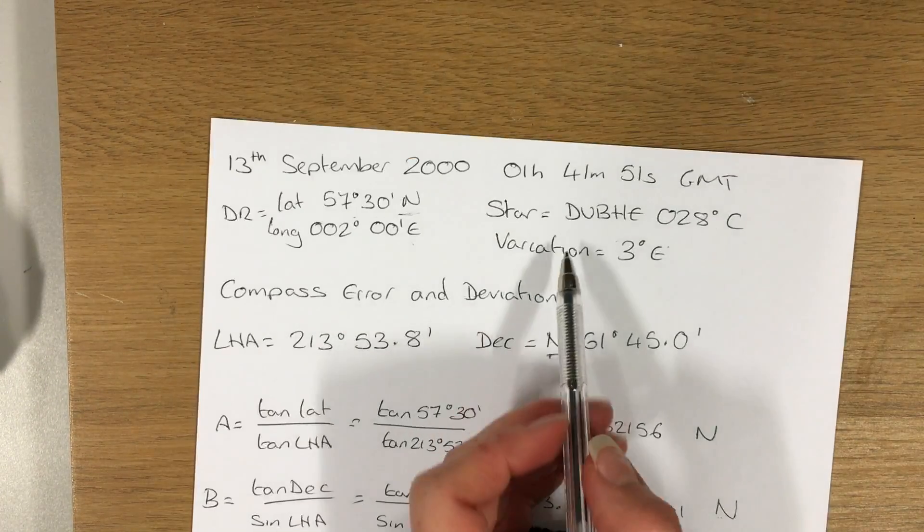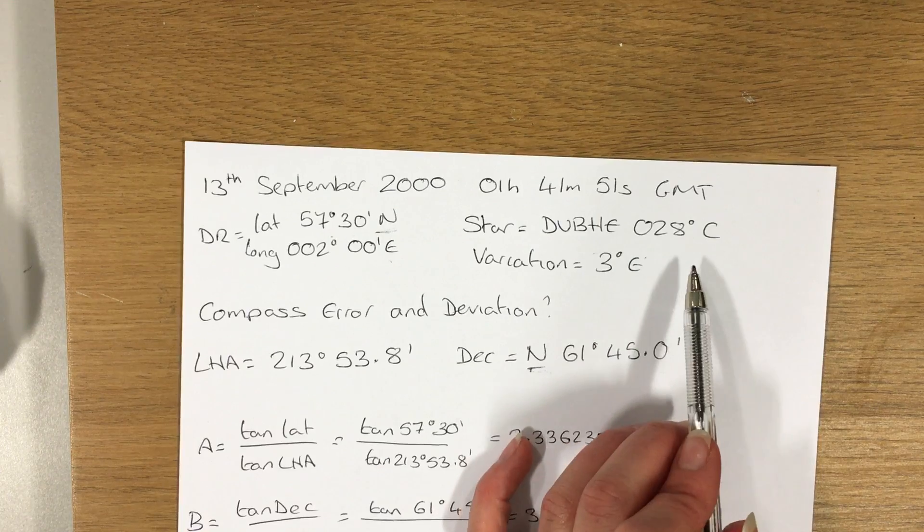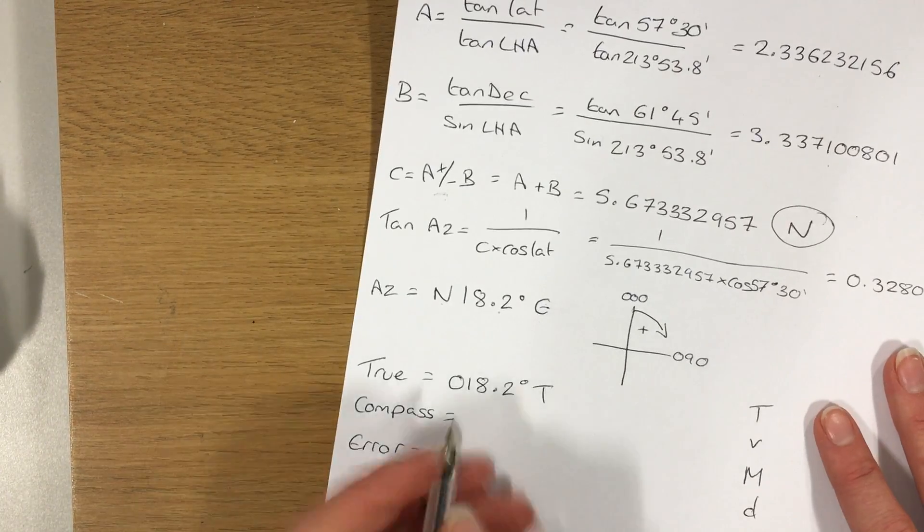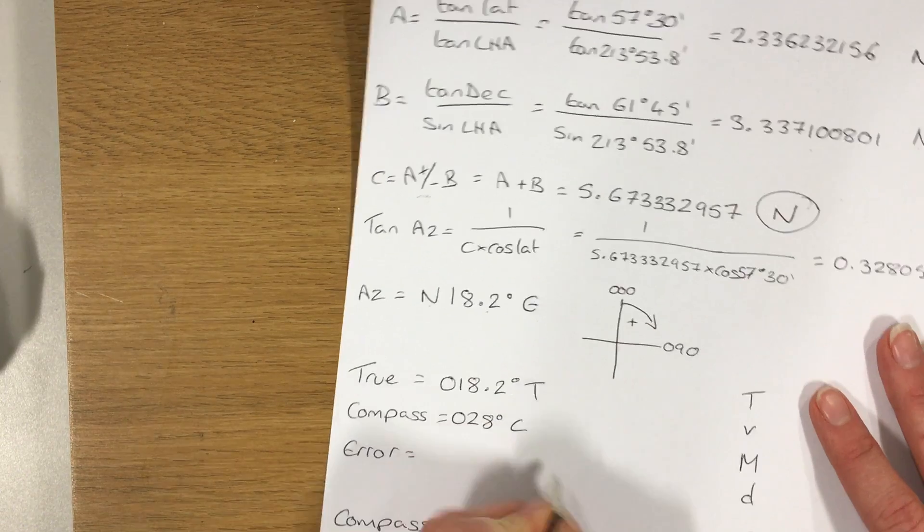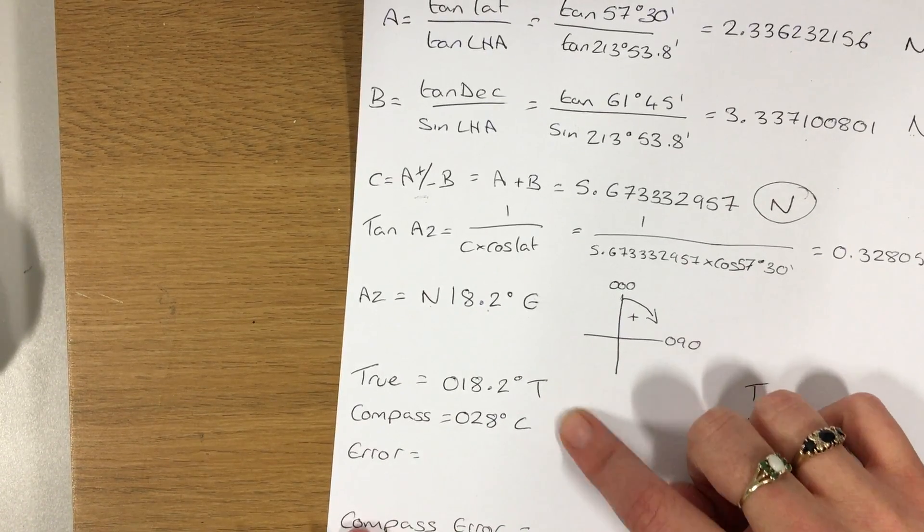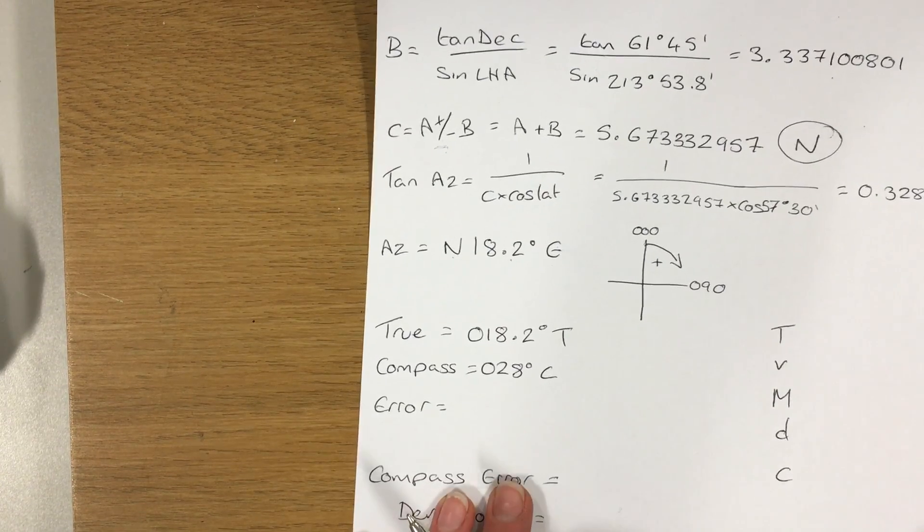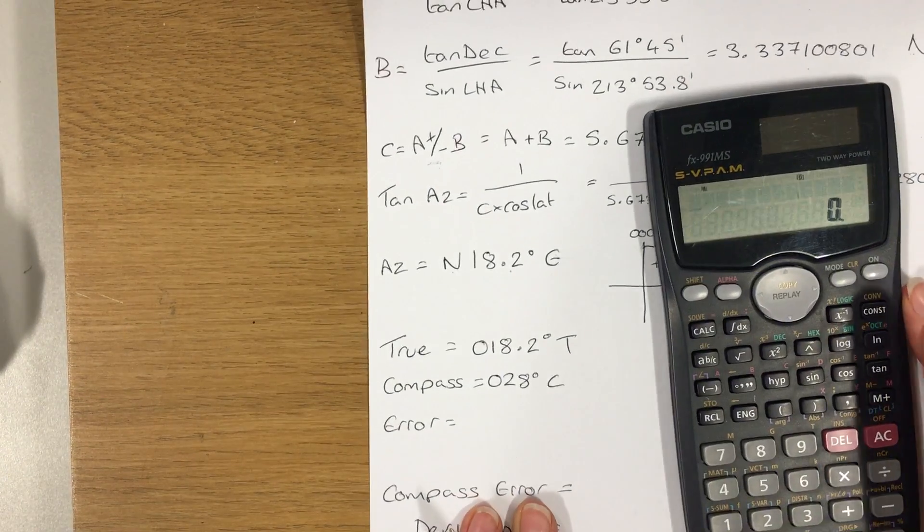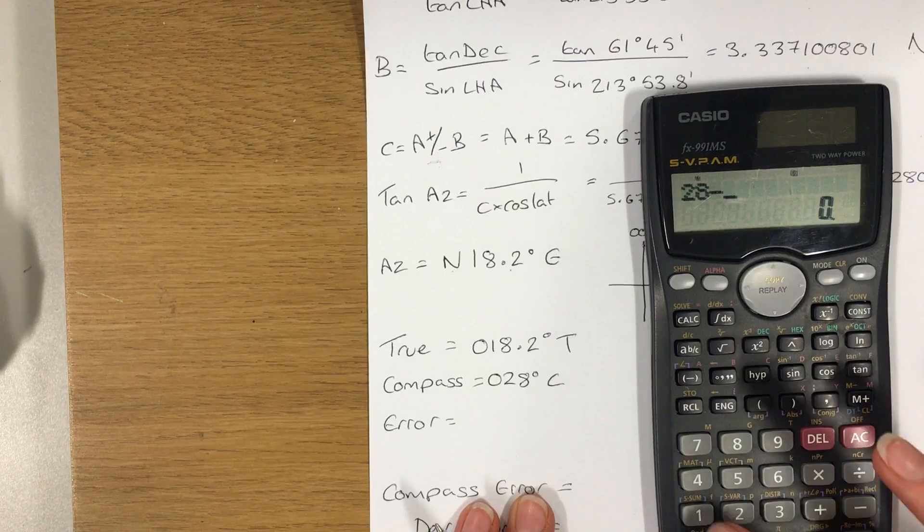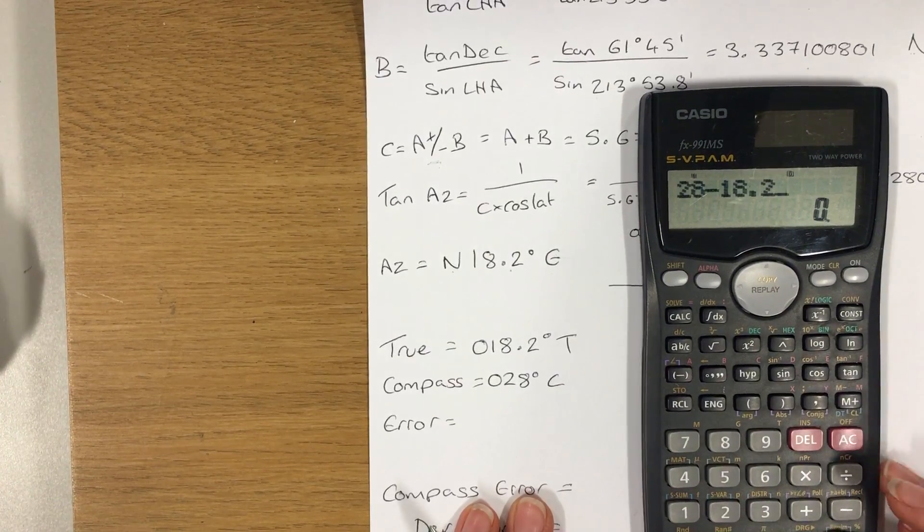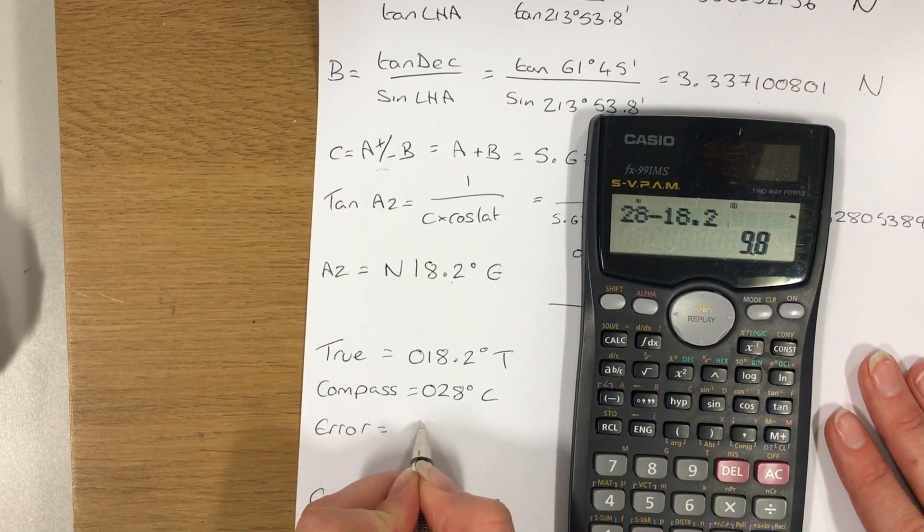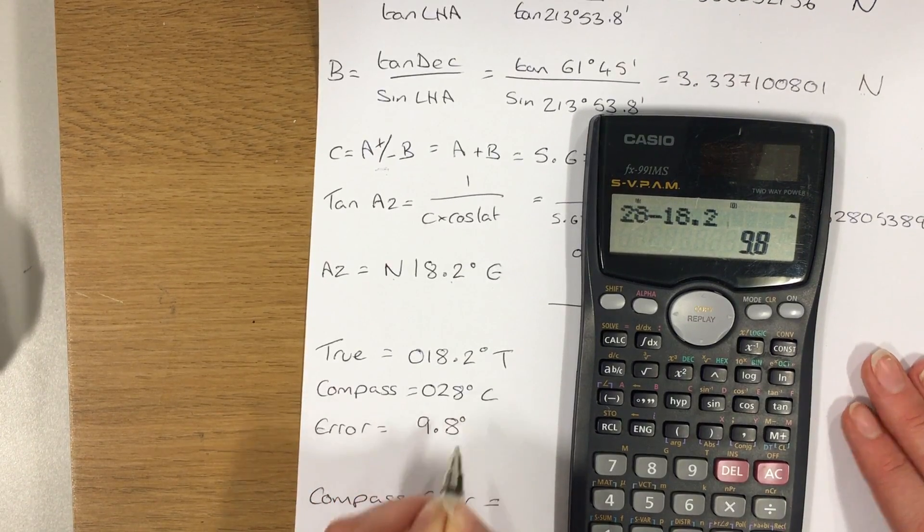So that will give me a true bearing of 018.2 degrees. The compass bearing was given to me in the question of 028. So you can see that there is some difference between these two values. That difference is my compass error. So 1 minus the other will give me the value for that error.